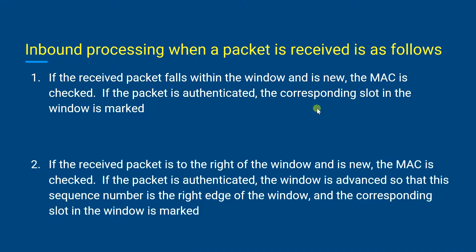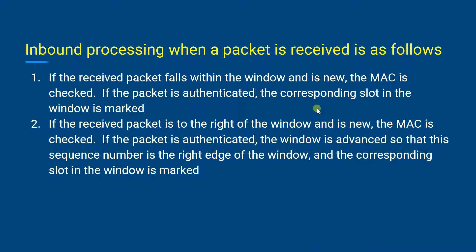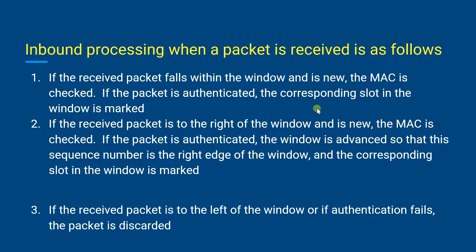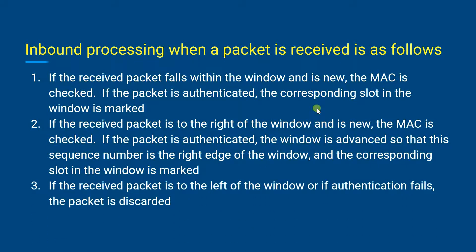Secondly, if the packet is to the right of the window and is new, the MAC is checked. If the packet is authenticated, the window is advanced so that the sequence number is at the right edge of the window, and the corresponding slot in the window is marked. If the received packet is to the left of the window, or if authentication fails, the packet is considered not valid and is discarded.